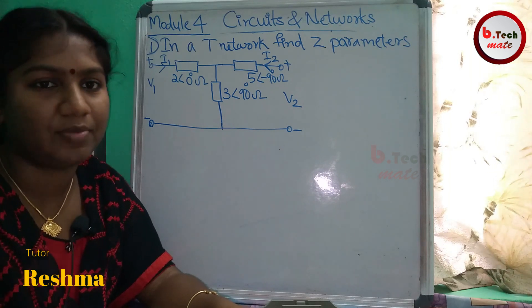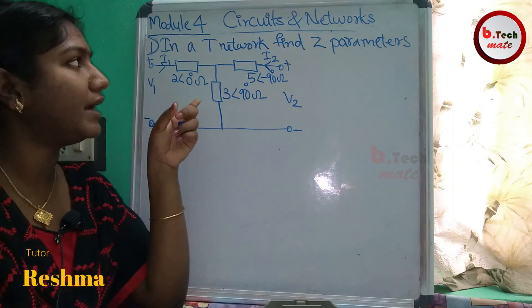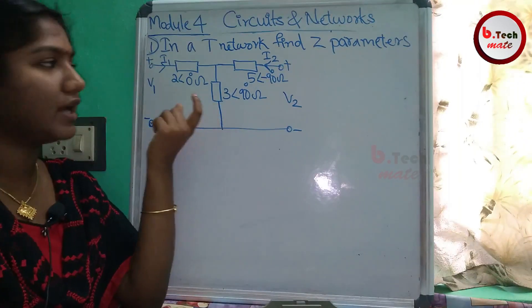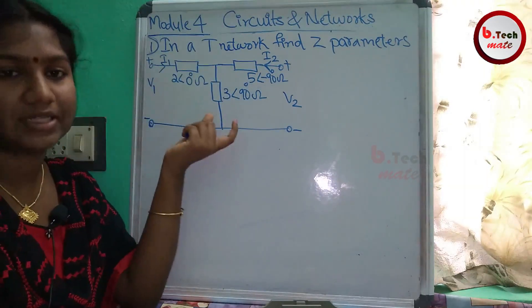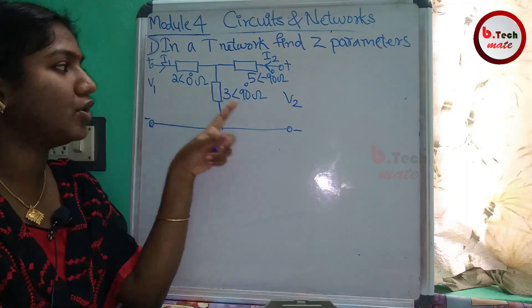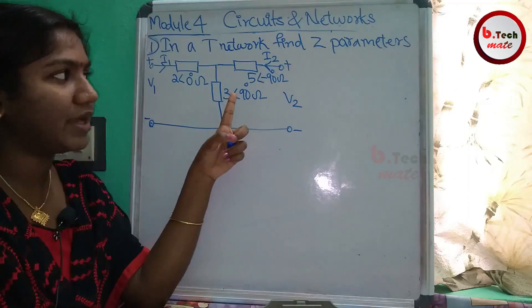The first problem is to find the Z-parameters for a T-Network. The T-Network is T-shaped, and we need to find the Z-parameters. The quantities given are 2 angle 0, 3 angle 90, and 5 angle -90.